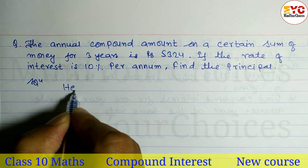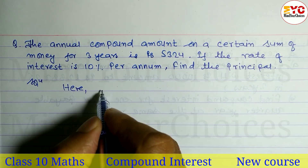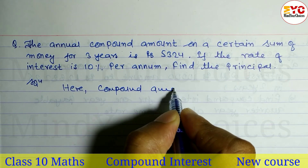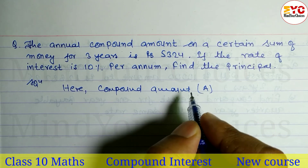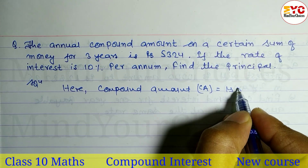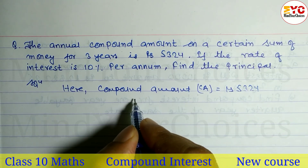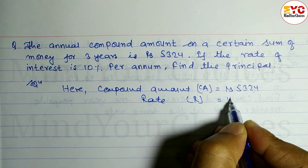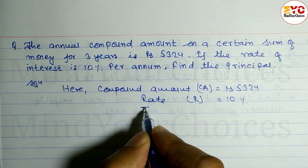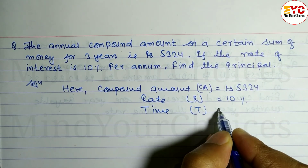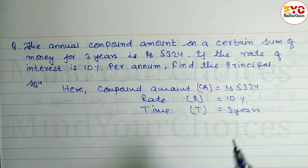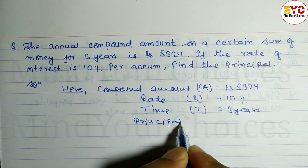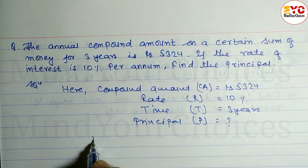Let's start. Compound amount CA is equal to rupees 5324. Rate of interest r is equal to 10%. Time t is equal to three years. We have to find the principal, so principal P is equal to question mark.